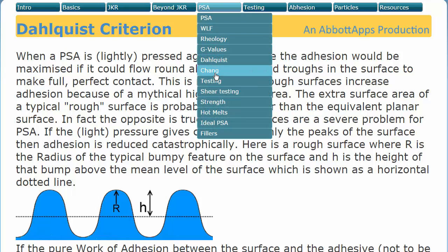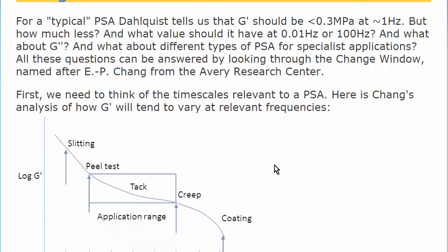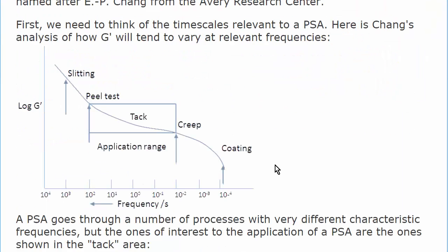The other thing you must do is make sure you're in the right part of the Chang window. Chang, who worked for Avery Dennison, realized that there are a number of things which happen in the life of a PSA. It gets slit, it gets coated, but of key interest is the peel test, which takes place at a frequency of about 10 to the 2 per second, creep, which takes place over hundreds of seconds, and tack, which takes place over, say, one second.